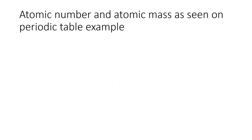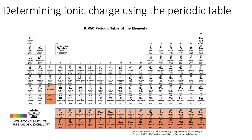Atomic number and mass are shown on the periodic table. For hydrogen, the number at the top is 1 — the atomic number — and underneath you'll have a 1-point-something or just 1 for the atomic mass. This tells you hydrogen has one proton and a mass of one. A hydrogen with a mass of 2 would have one proton and one neutron.